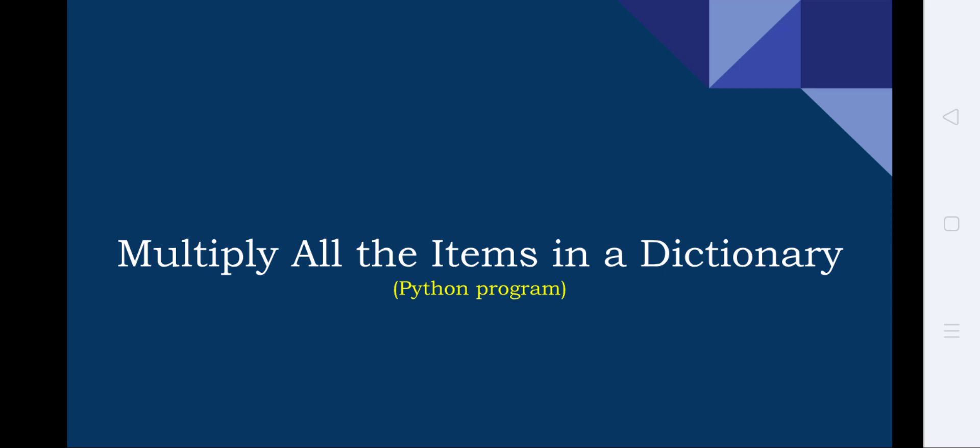First let us know what is a dictionary. Python has many data types as collections. As usual, any programming language has the basic data types: integer, character, string, and float.